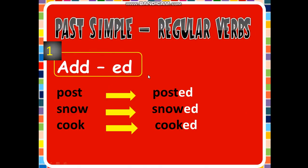The first rule: do you remember that I told you that many verbs in the English language follow the rules? Because of this we call them regular verbs. The first rule is we have to add 'ed' at the end of the verb. Like: post → posted, snow → snowed, cook → cooked. We added 'ed'. This is the most important rule, my lovely friends — don't forget it.